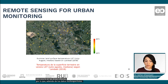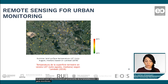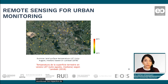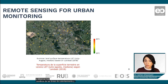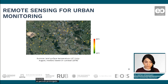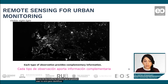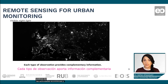Besides multi-spectral and radar data, other information from remote sensing can be used for urban monitoring. For example, land surface temperature derived from thermal data can be used to assess thermal conditions in urban areas, monitor the urban heat island impact, and look at changes in warming and cooling areas over a long time span. Another source of information is visible nightlight data, which can be used not only for identifying urban areas but also for analyzing economic activities and energy consumption.